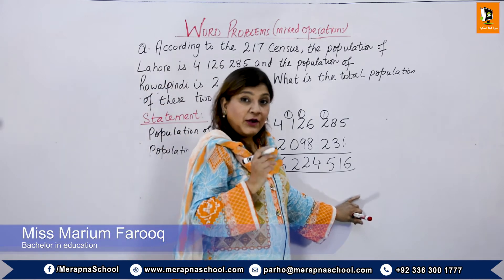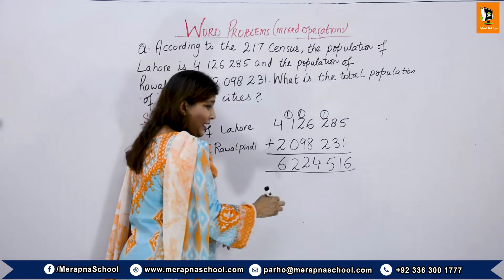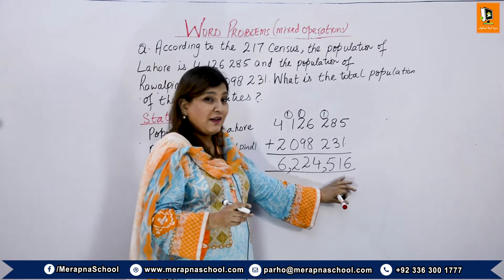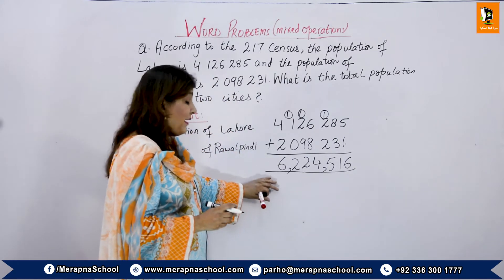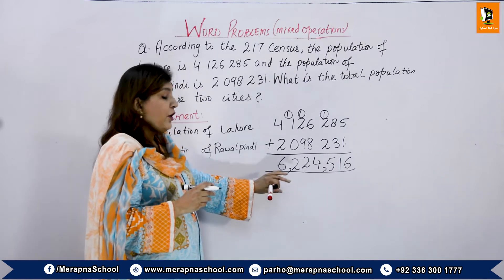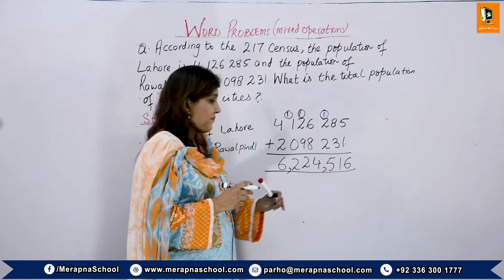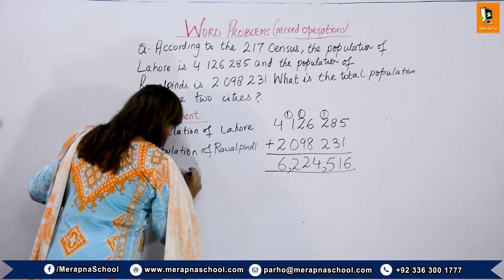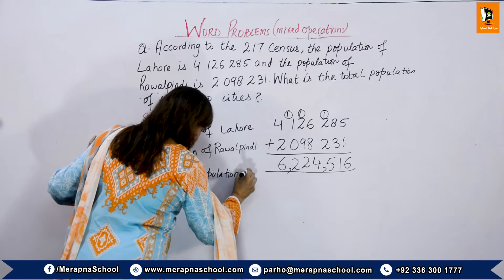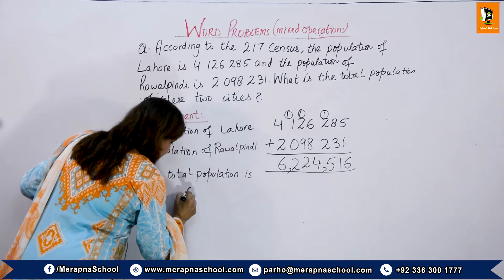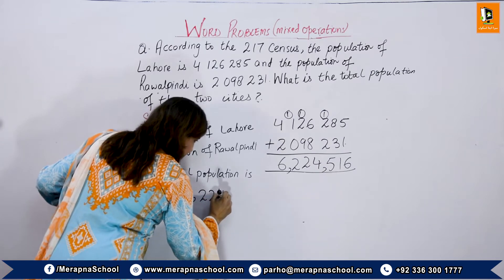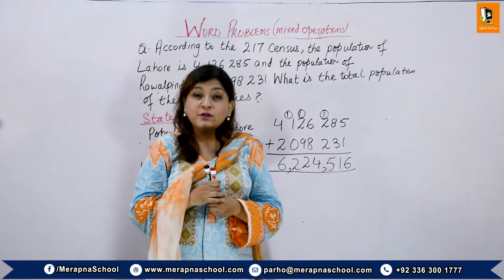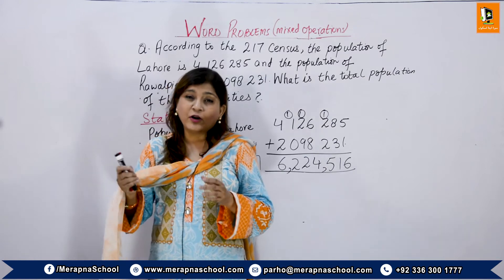It is difficult to read this number, so we put commas starting from the right-hand side — after every 3 numbers. This is the ones period, this is the thousands period, and this is the millions period. So we read it as 6,224,516. The total population is 6,224,516. That is your answer statement. Never forget to write the answer statement at the end when solving a word problem.